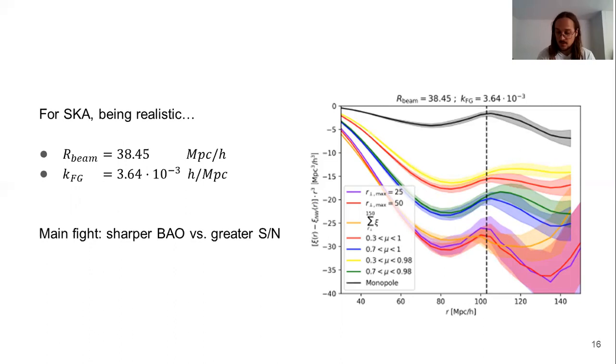As an example, the radial functions that we have below have a sharper BAO, but the signal-to-noise also is lower. But the mu-wedge function, that is the function in blue, which is the best one we have obtained, has a BAO that is not so sharp, but the signal-to-noise is higher.